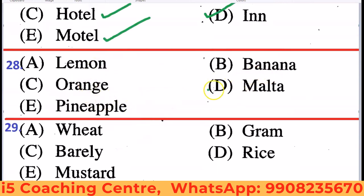Next: Lemon, Banana, Orange, Malta, Pineapple. All others except Banana are juicy fruits. Lemon, Orange, Malta, and Pineapple are juicy fruits, but Banana is not a juicy fruit. So the correct answer is B — Banana is the odd one out.